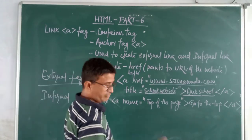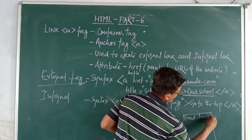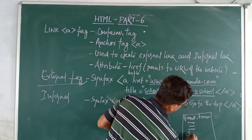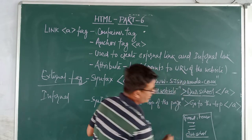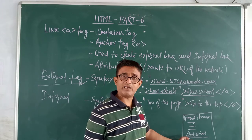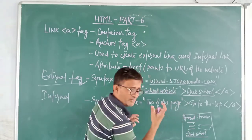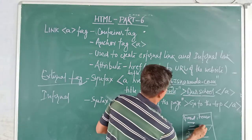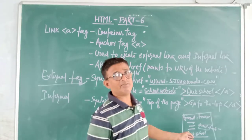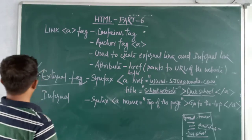Suppose you have created a website for food items with many things written, and in between you have a link 'our spoon'. When your mouse goes there it will glow, indicating it is a hyperlink. A popup box will appear telling you 'school website', so you understand this is a link you press to move to another site. That's how external linking works.